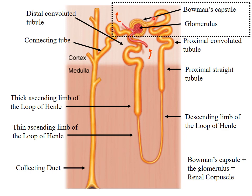Next is the proximal convoluted tubule, or PCT — a coiled structure. It extends as a proximal straight tubule, which is a straight segment. Together, the proximal convoluted tubule and proximal straight tubule form the proximal tubule. This is followed by the descending limb of the loop of Henle.